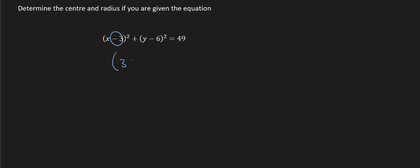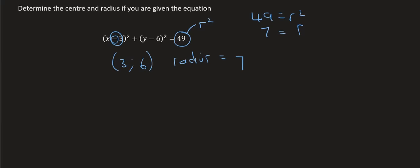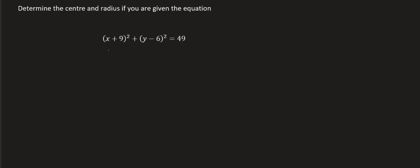For example, if I give you this equation, we can automatically say that the center point for x will be 3, because it's always the opposite of that sign, and the center point for y will be 6. The radius will be the square root of that number, which is 7 — because this part is r squared, so 49 is r squared, meaning r must be 7. And if we add this over here, the center point would be at negative 9 — remember, it's the opposite — positive 6, and the radius would be the square root of that number, which is 7.